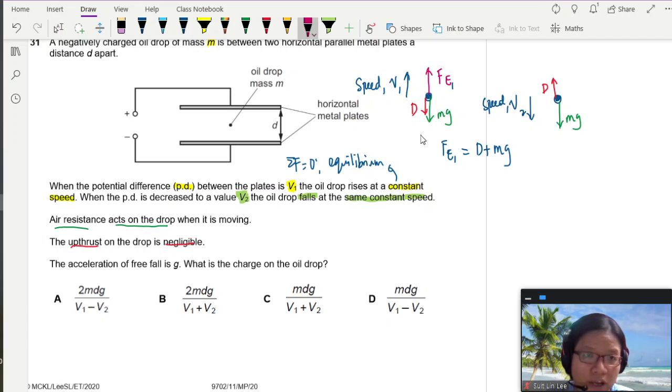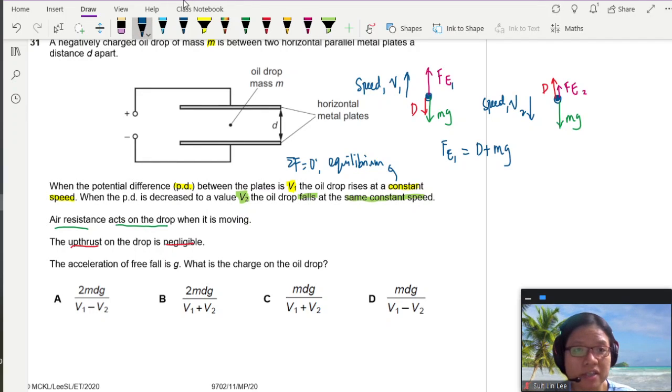So in this case, the electric force doesn't have to be so big. This Fe2 will be smaller. Why? Because drag force is helping it. So in this case, I can say that drag plus the electric force 2 is equal to mg. Okay? Once again, net force is 0 and it applies for both cases because constant speed.